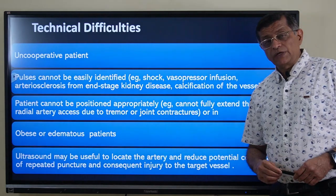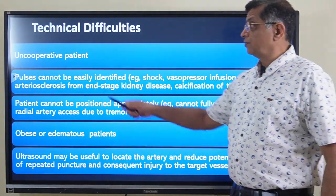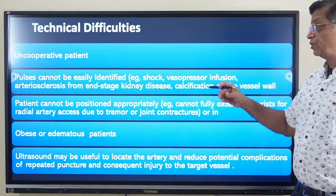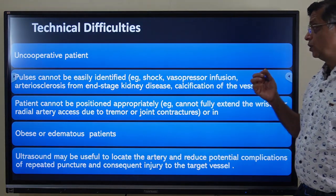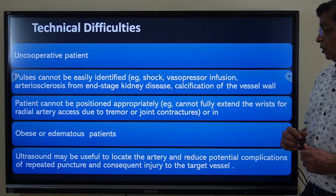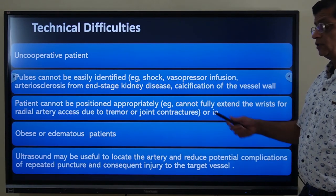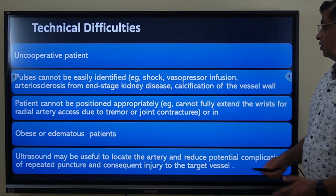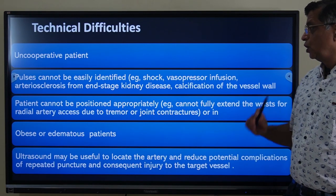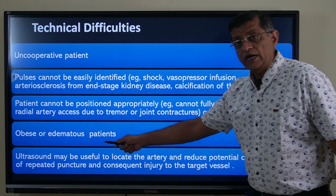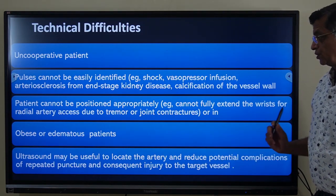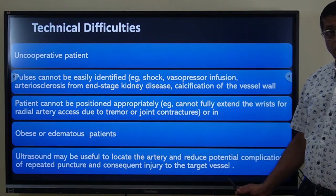There are technical difficulties sometimes encountered when taking an ABG sample — for example, an uncooperative patient, impalpable pulse due to shock or high-dose vasopressin, arteriosclerosis from end-stage kidney disease, calcification of the vessel wall, inability to position appropriately due to fixed flexion deformity, tremor, or joint contractures. In obese patients or those with generalized edema, ultrasound may be useful to locate the artery and reduce complications from repeated punctures.